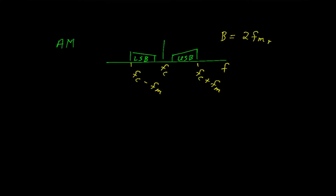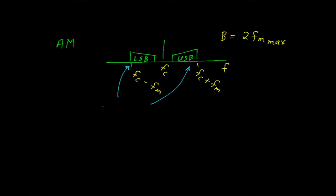We can put a subscript specifying that it's the maximum frequency — so the bandwidth is 2×Fm_max. We should note that the upper sideband and the lower sideband are mirror images of each other, and that's something that will be very important to us as we move forward.